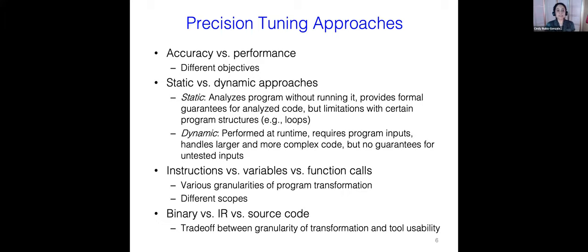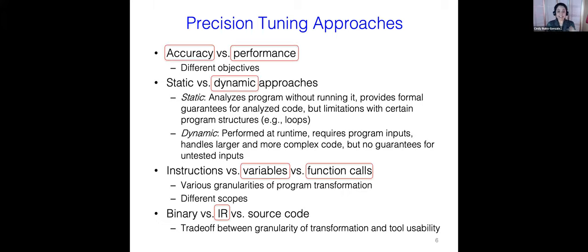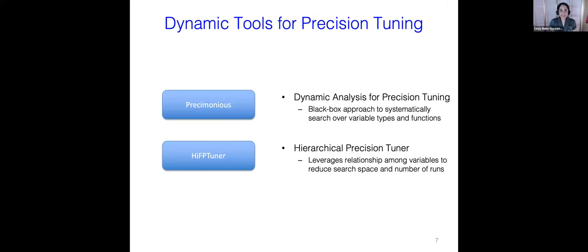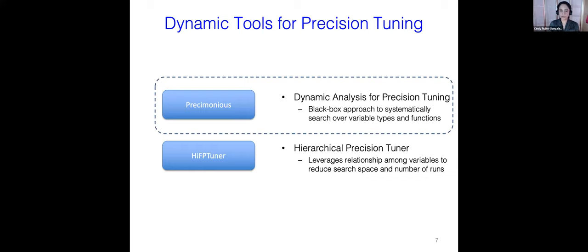In the rest of the talk, I will describe one of the earliest tools in automating precision tuning, called Presimonials, and I will also talk about a more recent tool, HiFP Tuner. Both of these tools implement dynamic approaches that consider both accuracy and performance when searching through variables and function calls, and these tools work at the IR level.